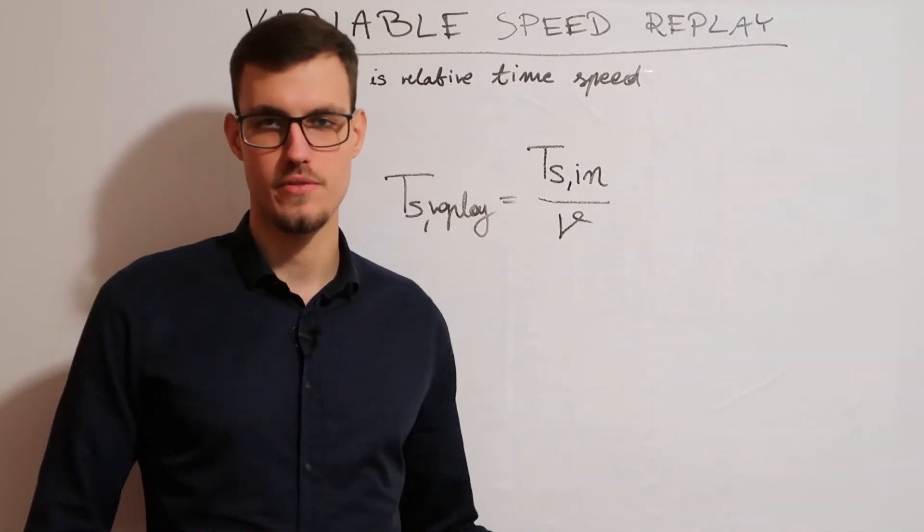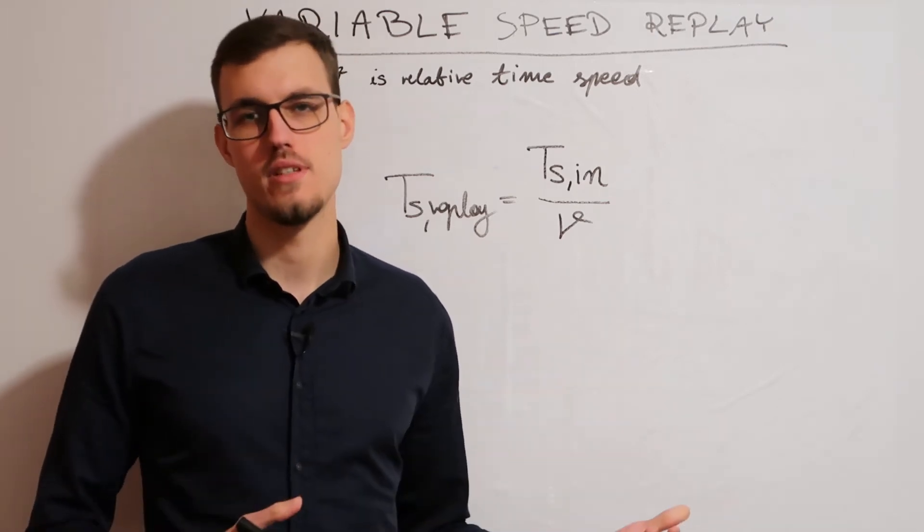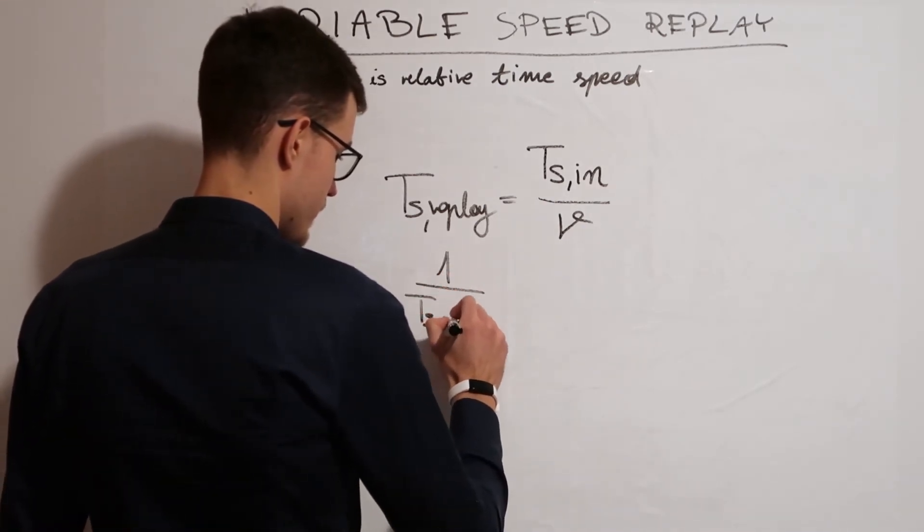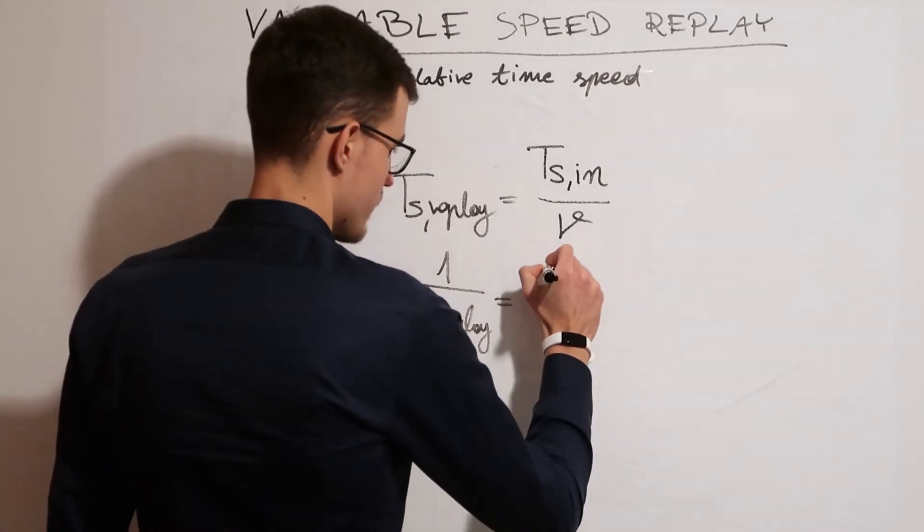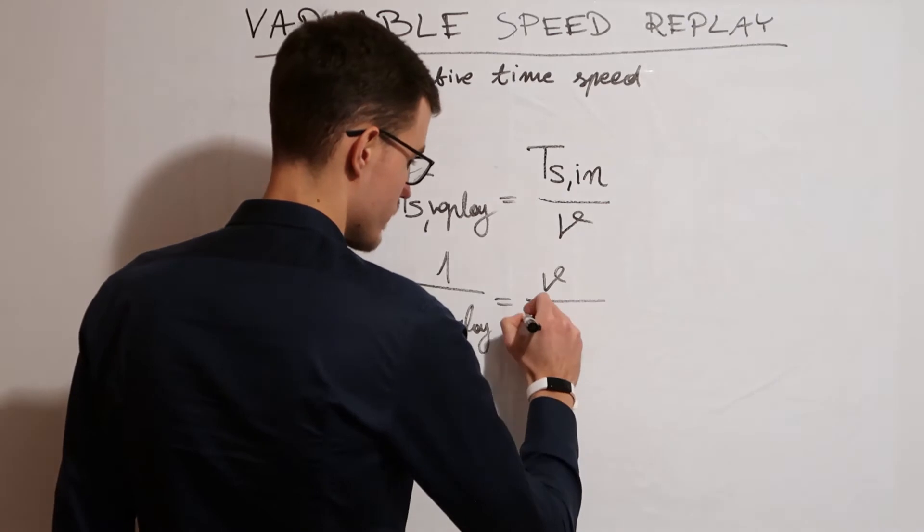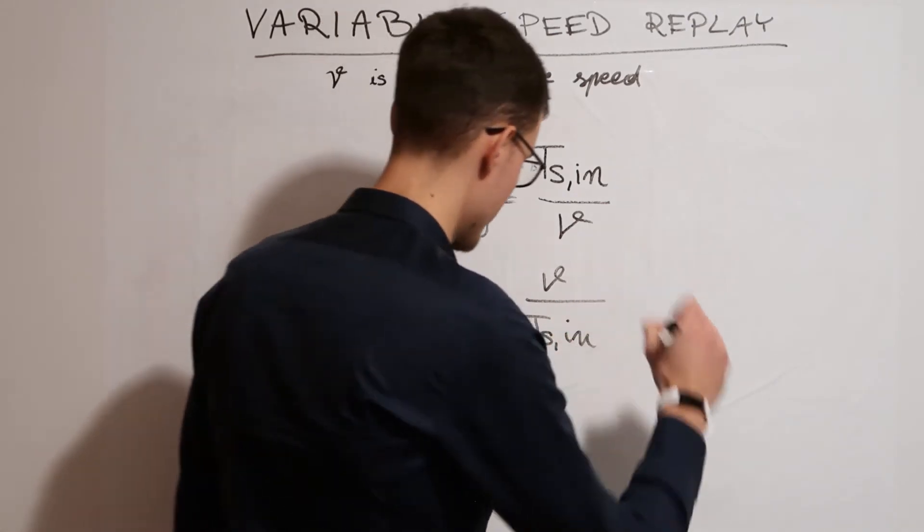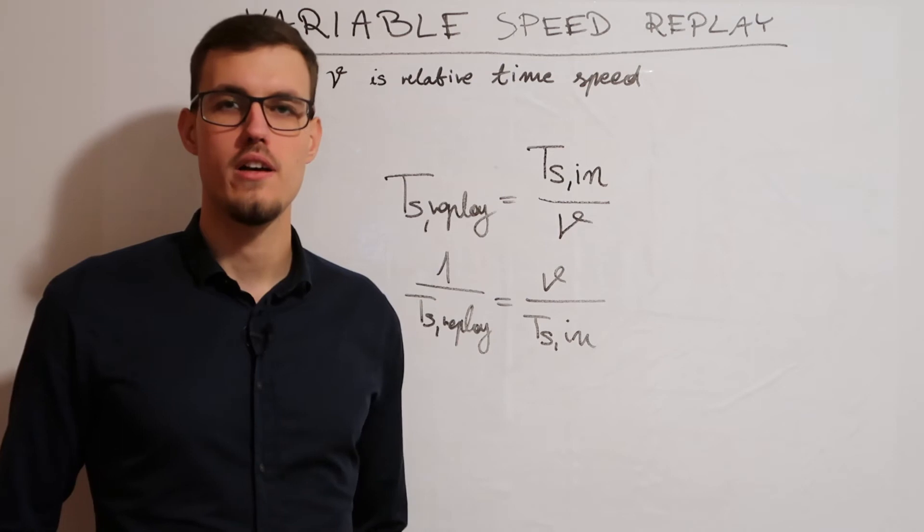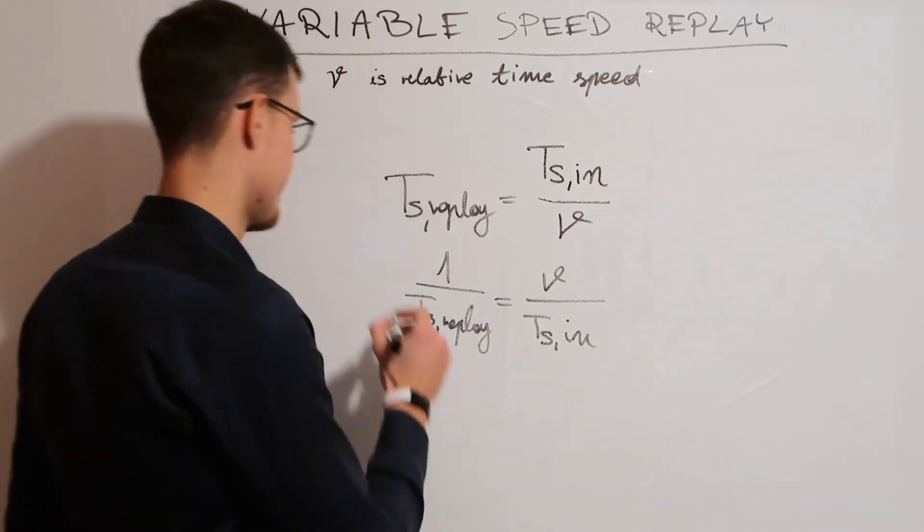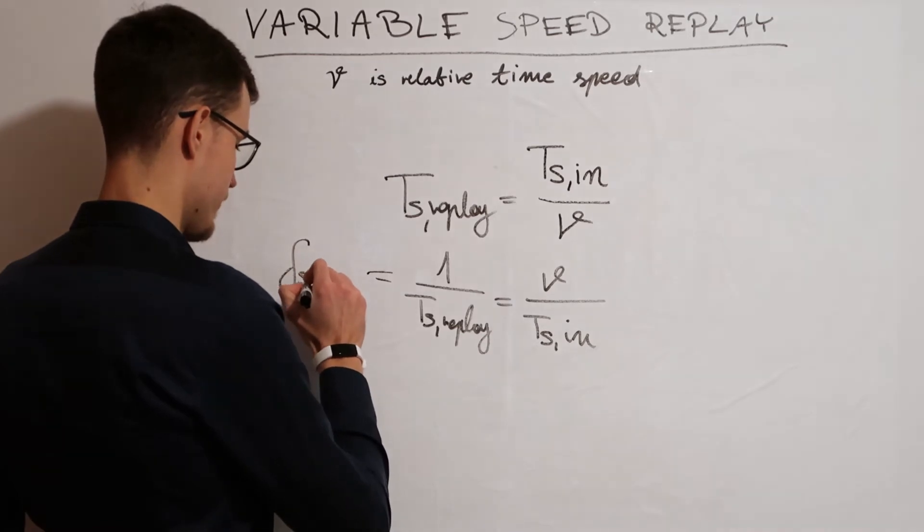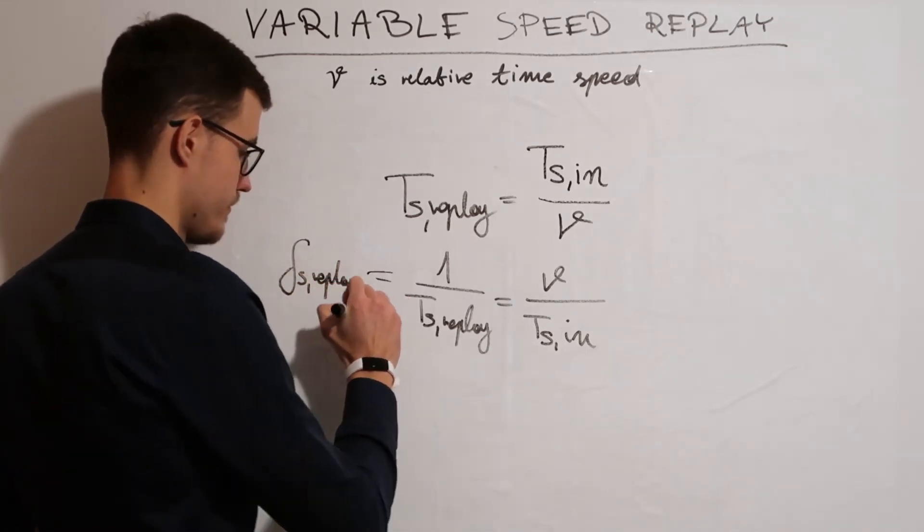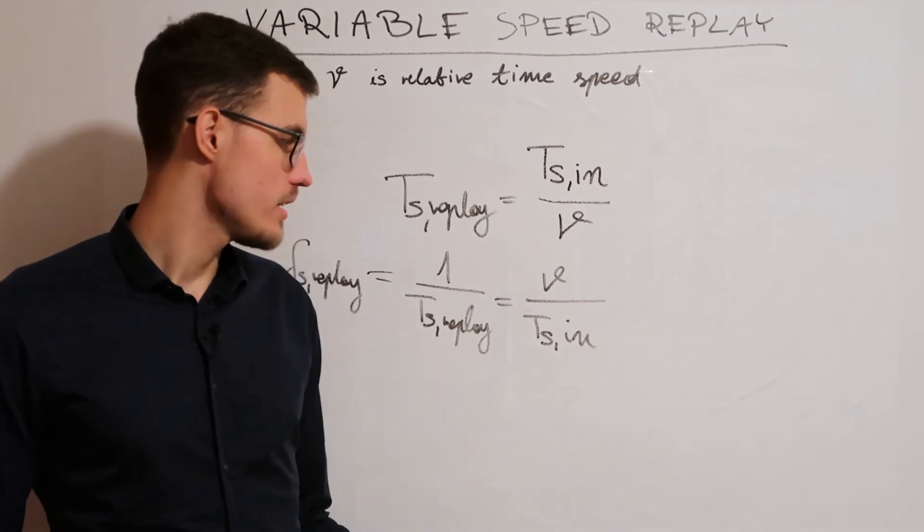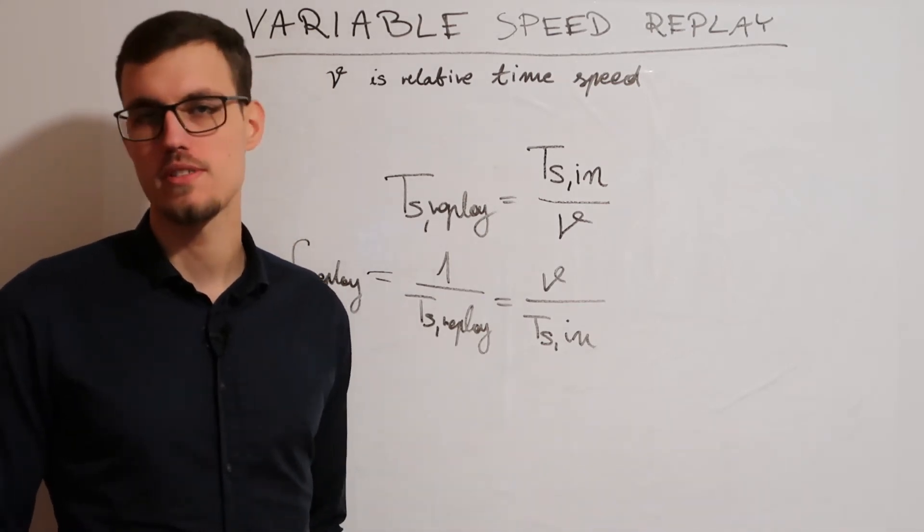Now, taking the reciprocal of this formula, we get to the frequency domain. We see that on the left-hand side, we have the formula for the frequency at the output. And on the right-hand side, we have the formula of V times frequency at the input.